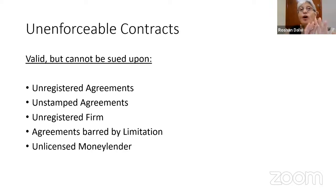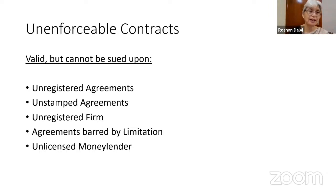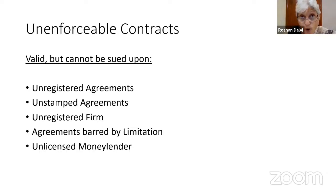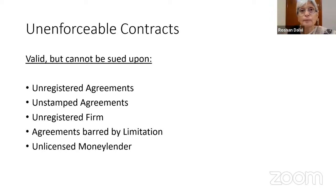We are talking about enforceable contracts, but there are some contracts which would otherwise be enforceable but which are unenforceable at certain times. They are valid, but they cannot be sued upon. For example, if an agreement requires registration — it requires transfer of some property — all those agreements must be registered. If not registered, it cannot be sued upon. It is unenforceable at law until it is registered. Under Section 59 of the Registration Act, if a contract is for a collateral purpose, or you are suing only for specific performance, that is allowed.